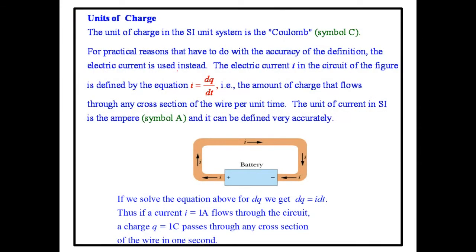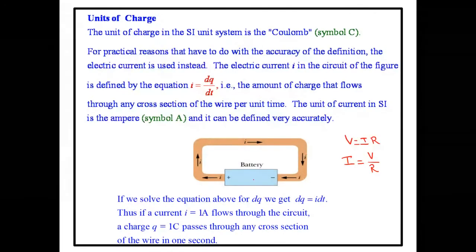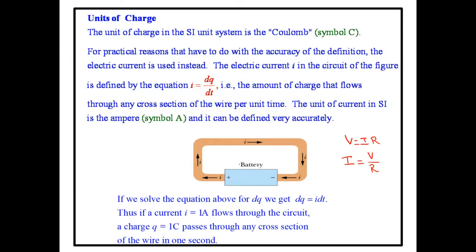Now we study the formula for current. We already have Ohm's Law: V = IR, where V is voltage, I is current, and R is resistance. But in this chapter we also study another formula: electric current I equals electric charge Q divided by time t — that is, how many charges pass per unit time.